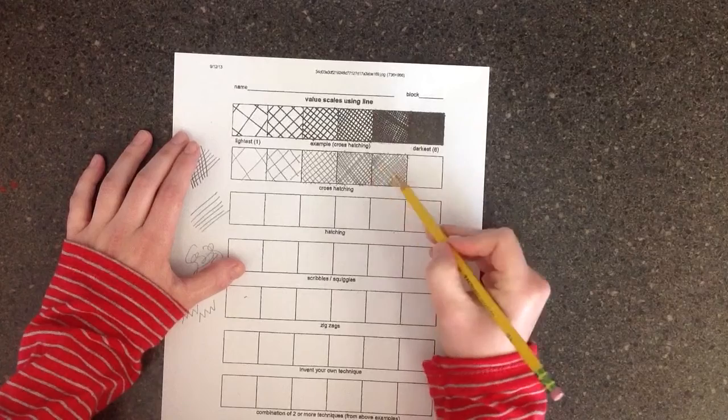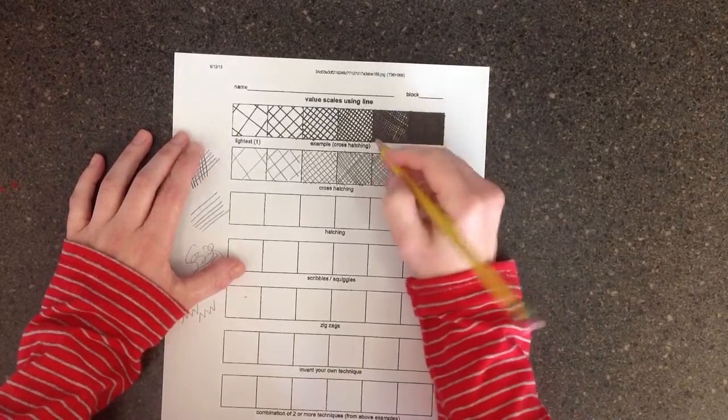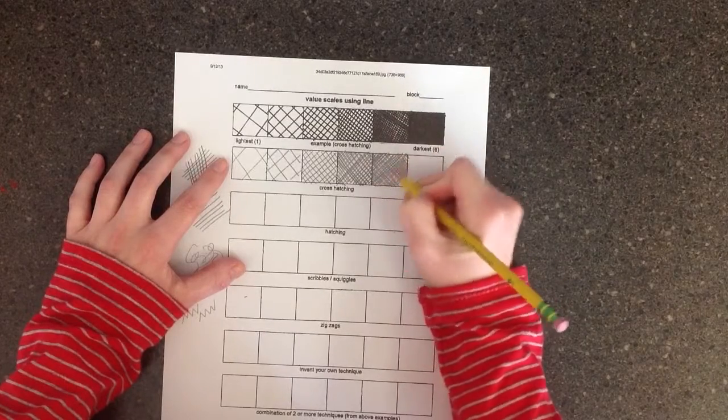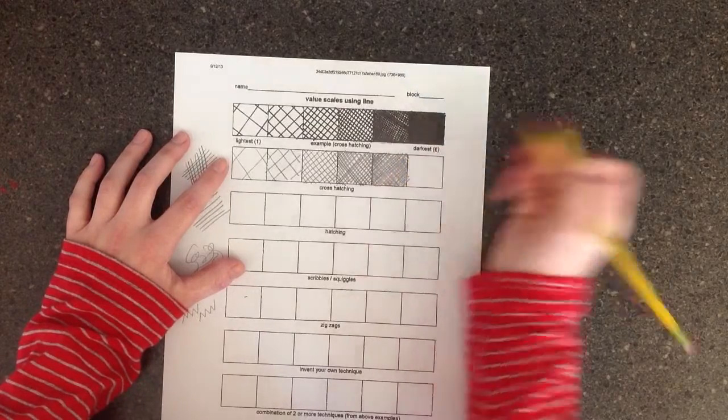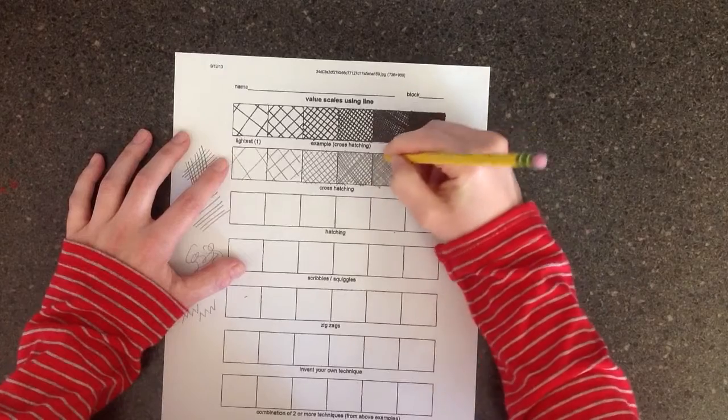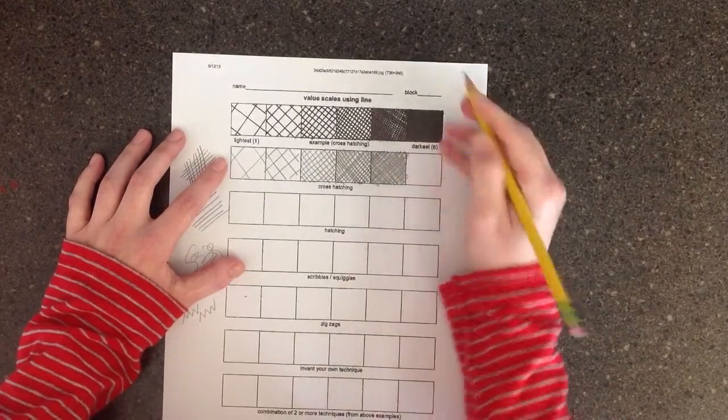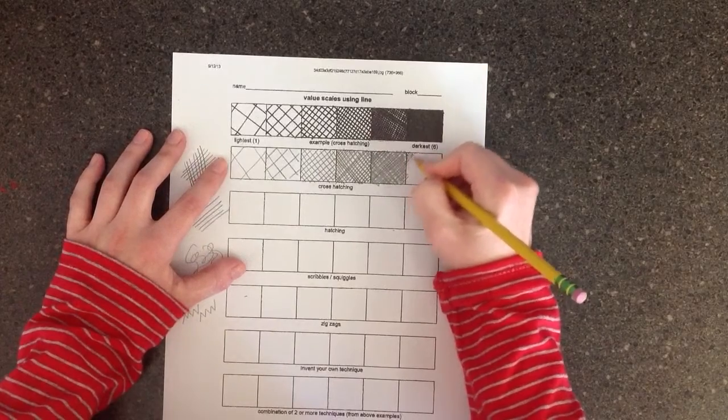So for example, I don't think this is dark enough, so I'm going to do a second layer on top. Still using the same kind of line, same direction. I'm just doing another layer on top. And so the last one would be the darkest, so the lines are pretty much touching.